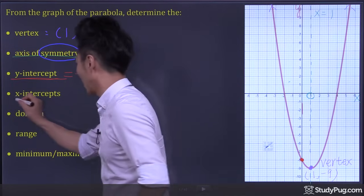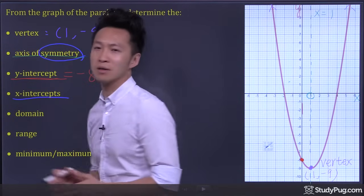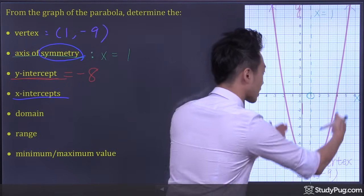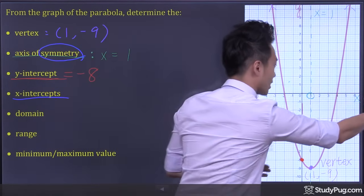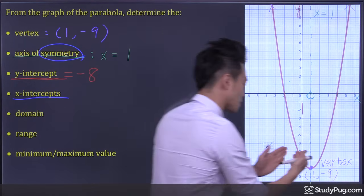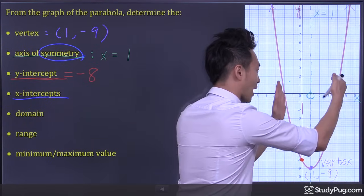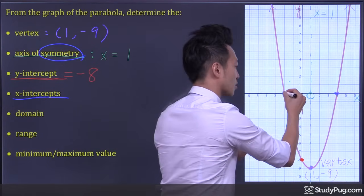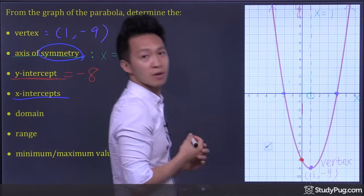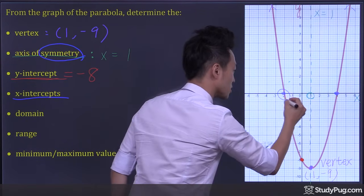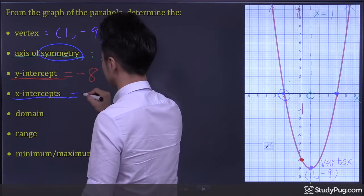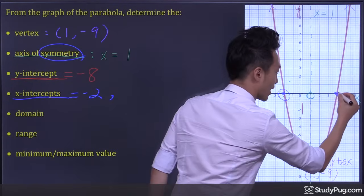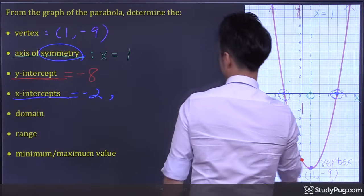Next, x-intercepts. The x-intercepts are the points where the parabola intersects the x-axis. So in this case, the parabola intersects the x-axis at two points: one at x equals negative 2, and another one at x equals 4.